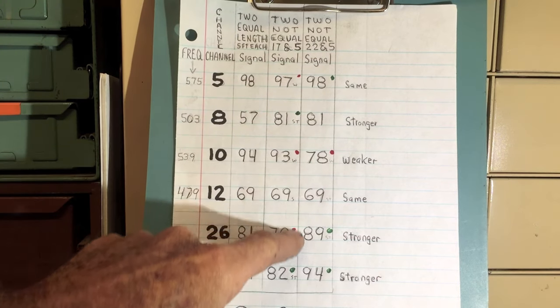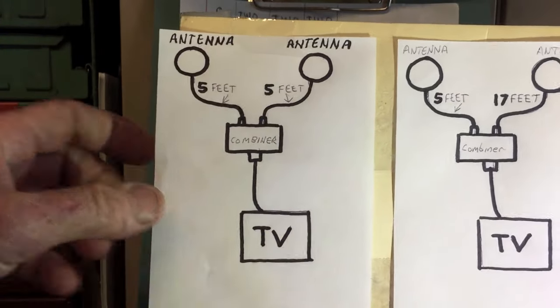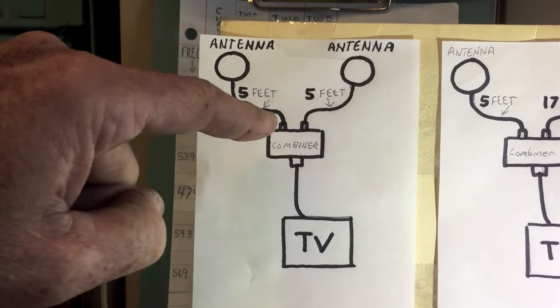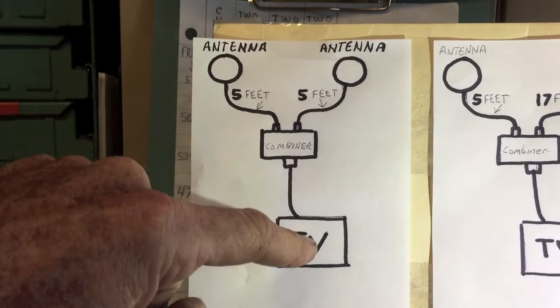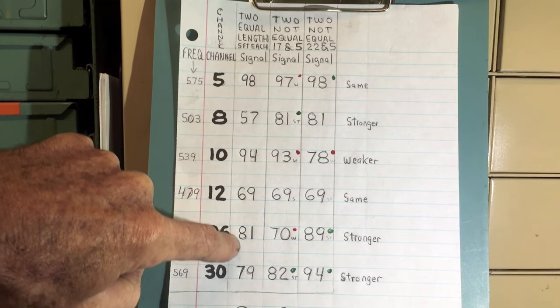These last three columns are the actual signals I received by changing the length of coax going to my antennas. In the first example, I had two five-foot lengths of coax going to my loop antennas, to a combiner, and then to the TV. These are the signals I got on the first example.